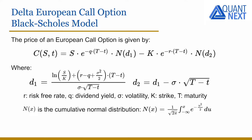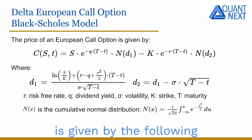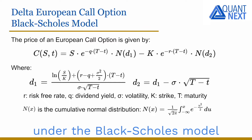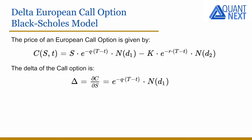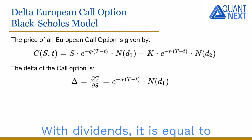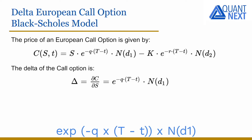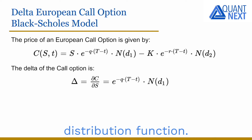As a reminder, the price of a European call option is given by the following closed-form formula under the Black-Scholes model with dividends. The formula for the delta is the following: with dividends, it is equal to the exponential of minus Q times capital T minus t, times N of D1, where N is the cumulative normal distribution function.